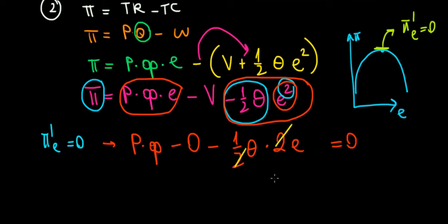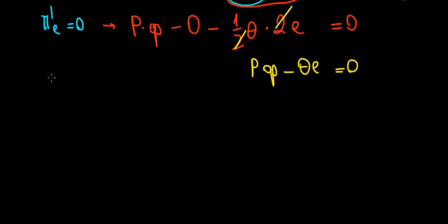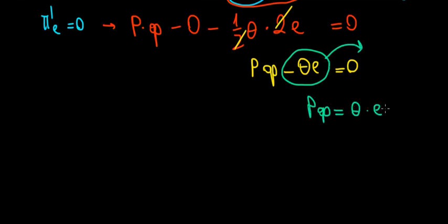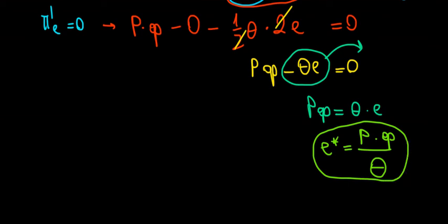Setting the derivative equal to zero gives us P times theta minus theta times E equals zero, so the optimal effort level is E equals P times theta divided by theta. Intuitively: effort increases with price P because higher prices generate more revenue; better technology theta raises production so more effort is rewarded with higher wages; and a higher cost of effort reduces effort because it is more uncomfortable to work.